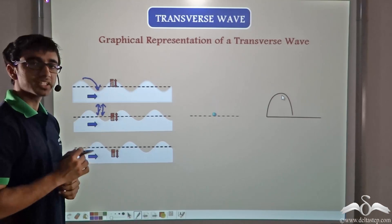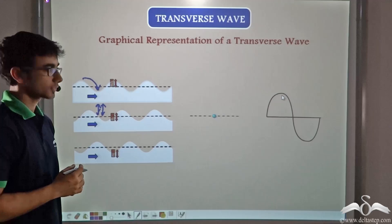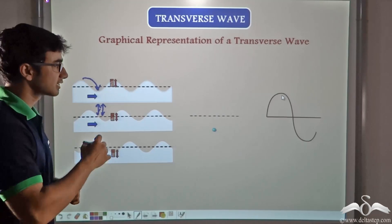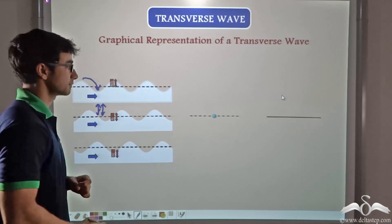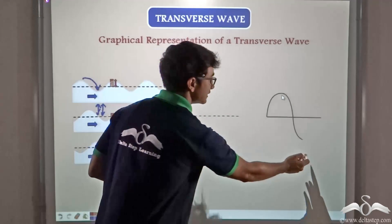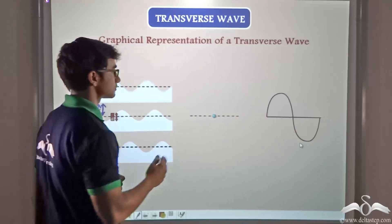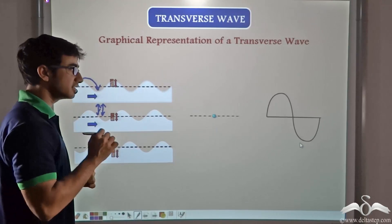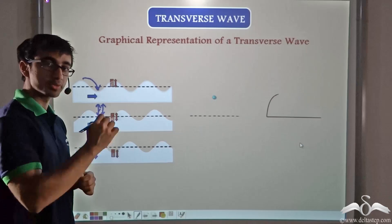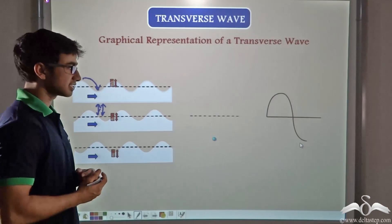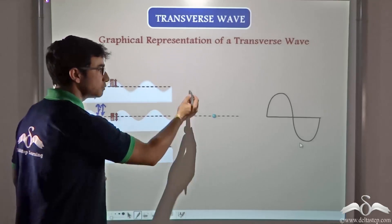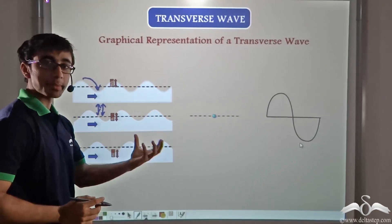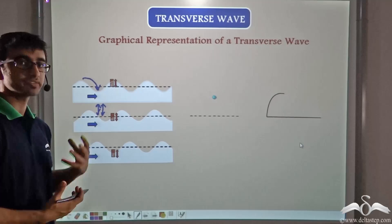The particle, after reaching the top, has a tendency to come back to its mean position. So it starts coming back, but due to the presence of the disturbance, it continues beyond its mean position and keeps moving downwards. This downward motion is shown by the negative side of the y-axis. When the particle reaches the bottom, it again has a tendency to go back up to its mean position and starts moving back up. This entire movement has been represented on the graph. Similarly, we can map the movement of other particles as well.